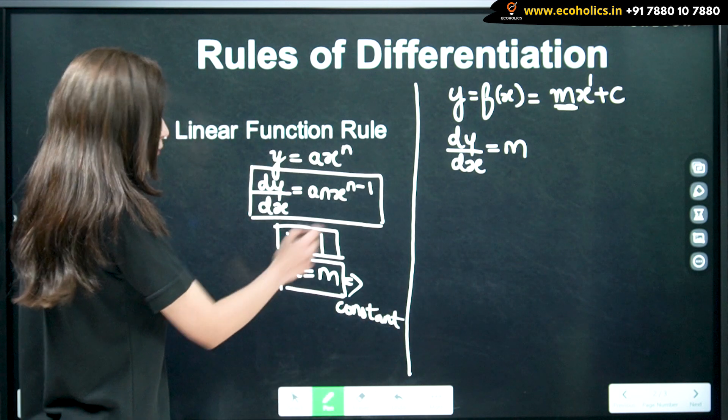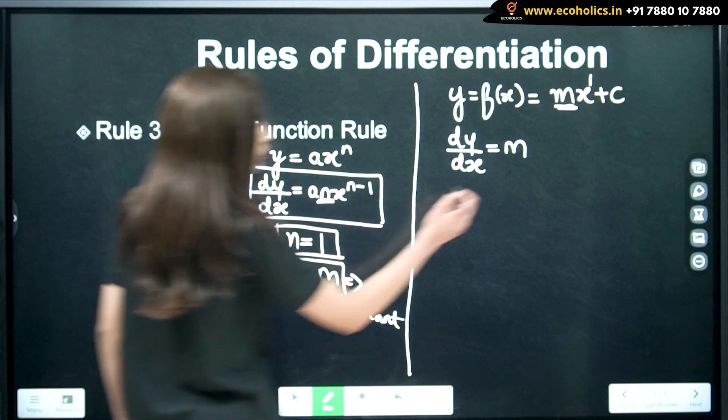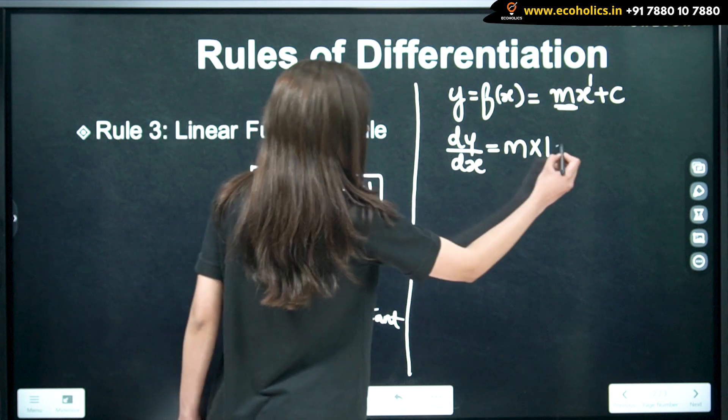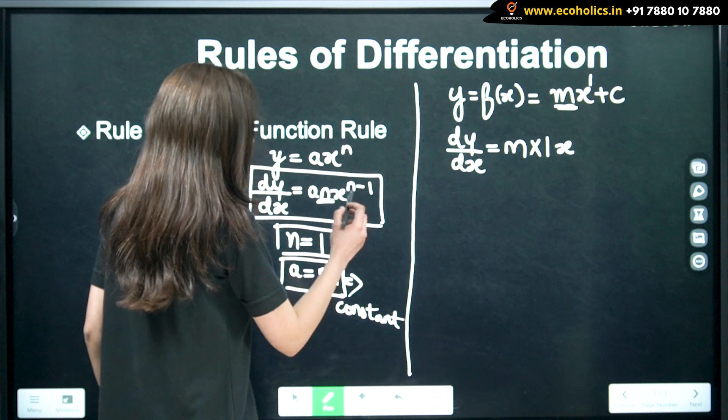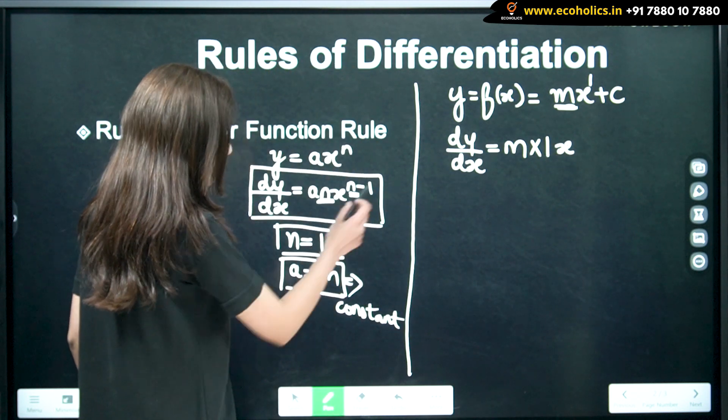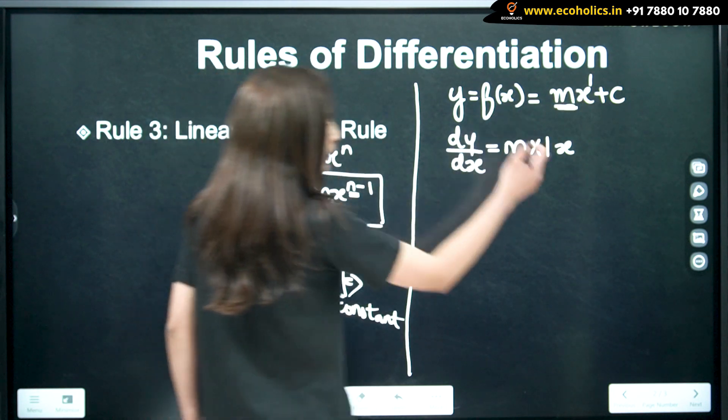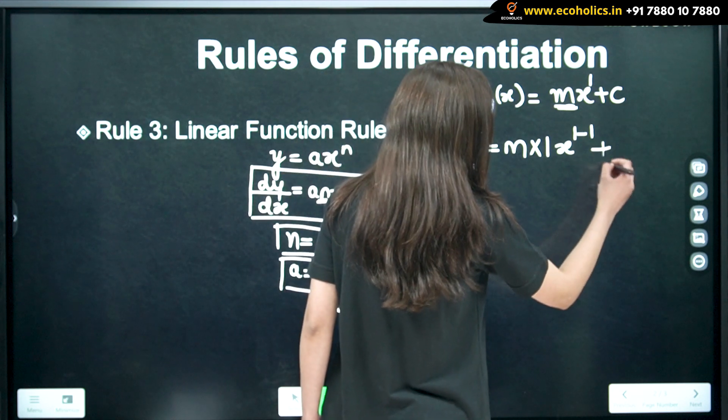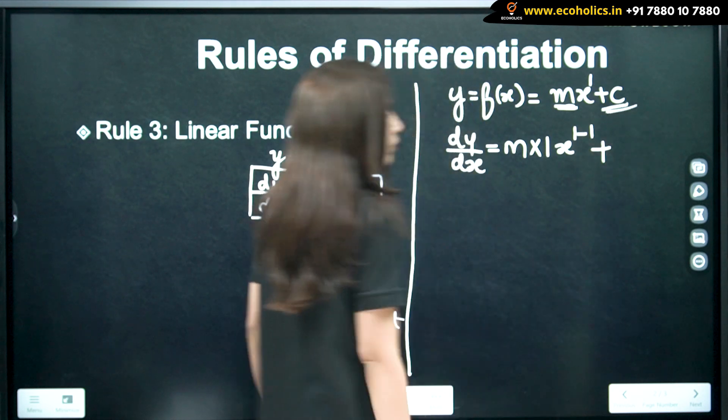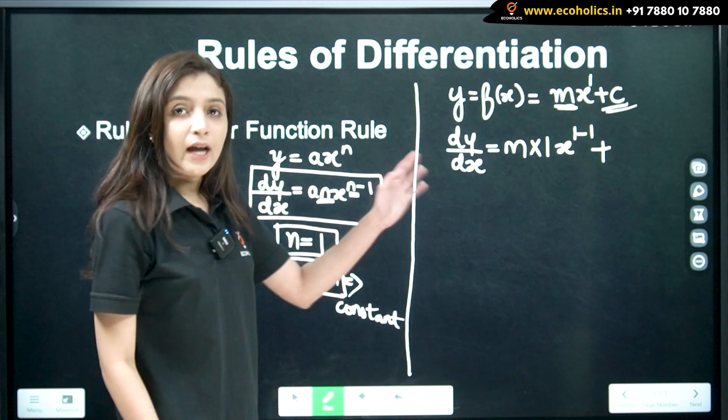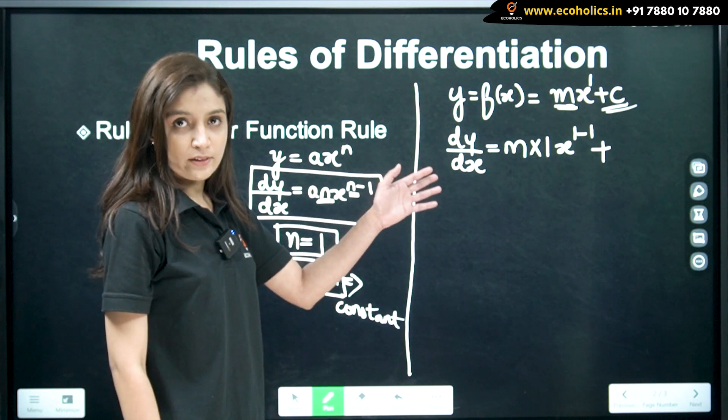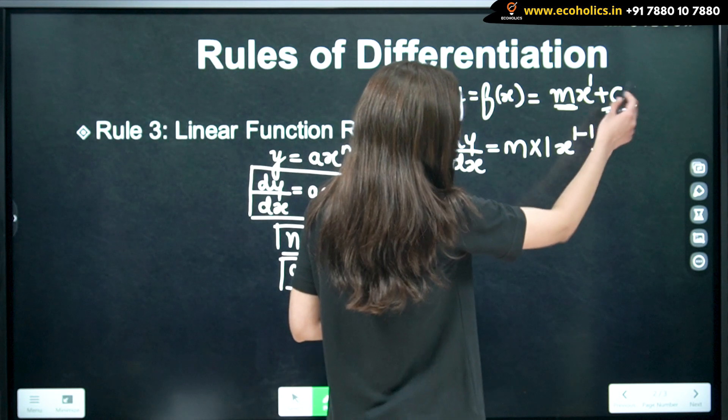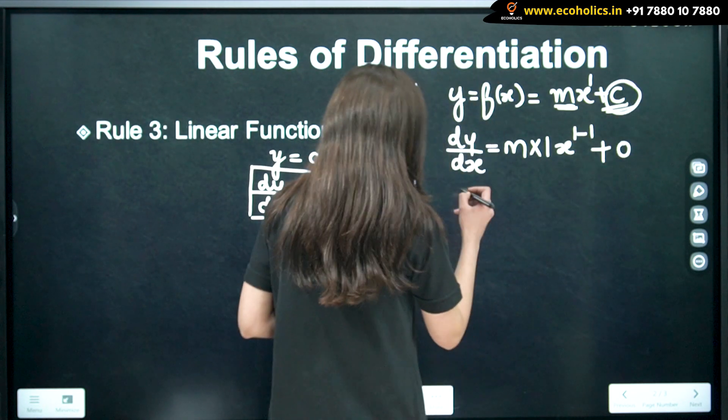So, now we have m, n is 1, x. So, n is 1 minus 1. So, here n is 1. Therefore, n minus 1 is this, plus we have already seen in our previous video that differentiation of a constant term is 0. So, differentiation of a constant term c becomes 0.